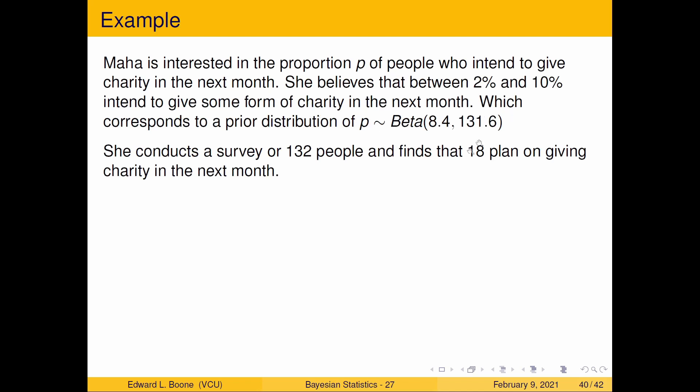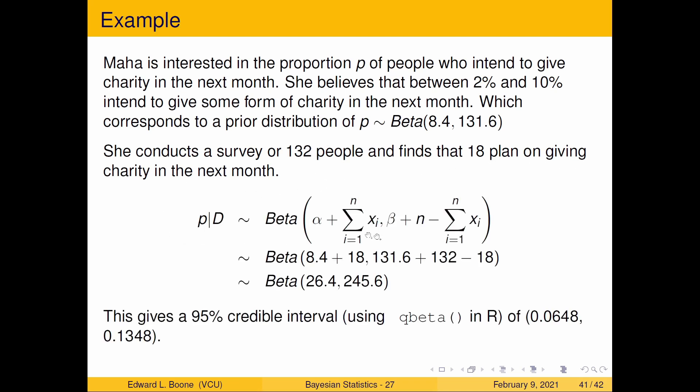So she goes out. You're going to use this prior distribution. Surveys 132 people. And finds that 18 plan on giving charity in the next month. So go back to our formula that we've been using. Plug in the alpha of 8.4. Plug in the sum of the xi, which is 18. Beta was 131.6. N was 132 minus our 18. We end up with a beta of 26.4, 245.6.